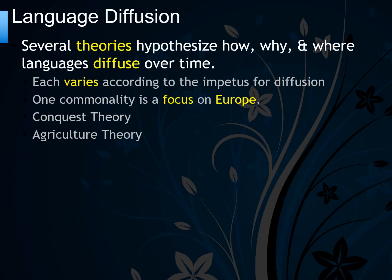Language diffusion — several theories hypothesize how, why, and where languages diffuse over time, each varying according to the impetus for diffusion. One commonality is a focus on Europe. There are different theories about how the Indo-European language family originated, and you need to know the conquest theory and the agricultural theory.